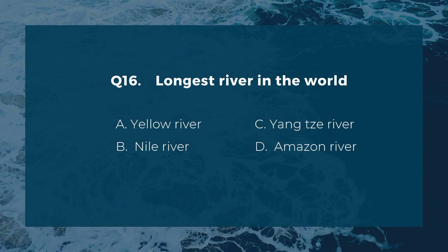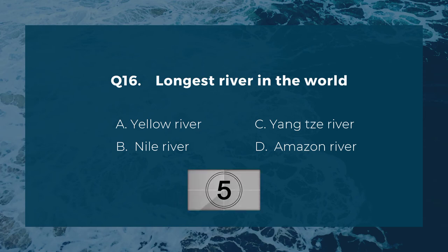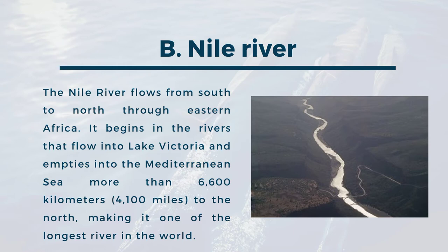Question sixteen: longest river in the world. A) Yellow River, B) Nile River, C) Yangtze River, D) Amazon River. The correct answer is B, Nile River. The Nile River flows from south to north through eastern Africa. It begins in the rivers that flow into Lake Victoria and empties into the Mediterranean Sea more than 6,600 kilometers to the north, making it one of the longest rivers in the world.